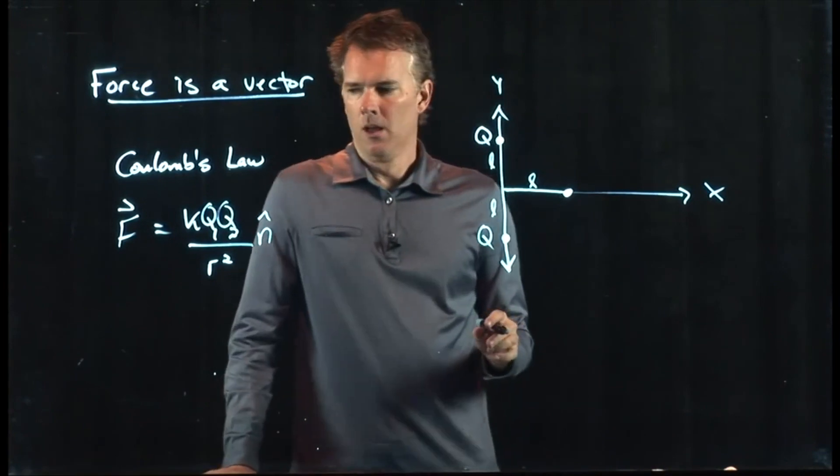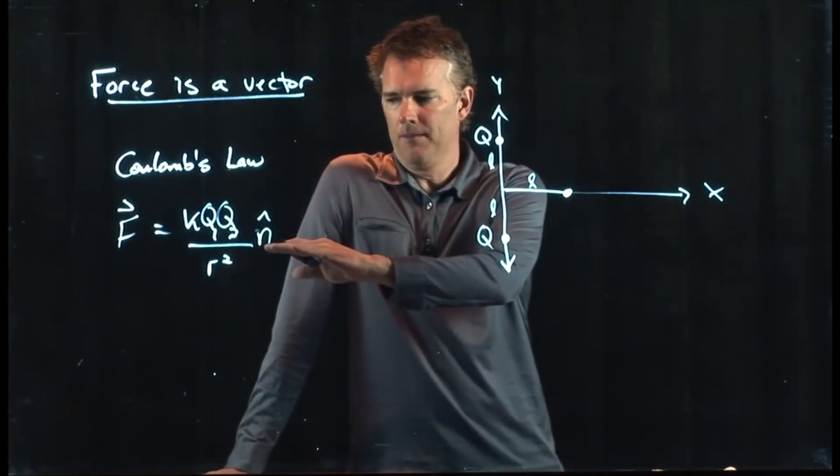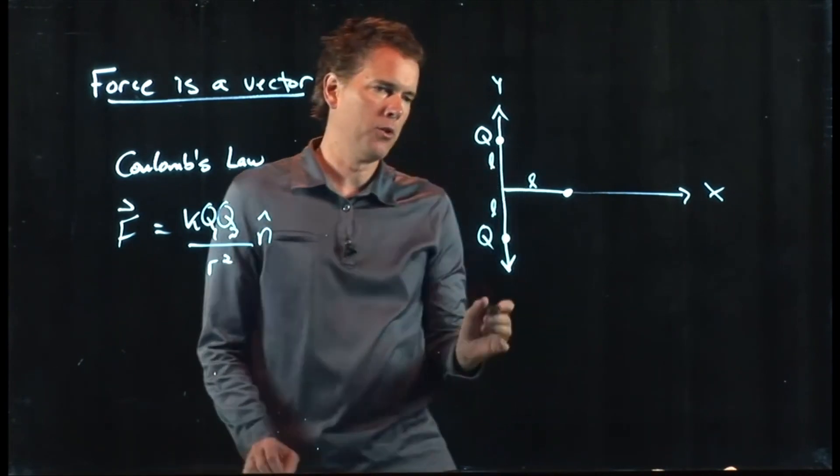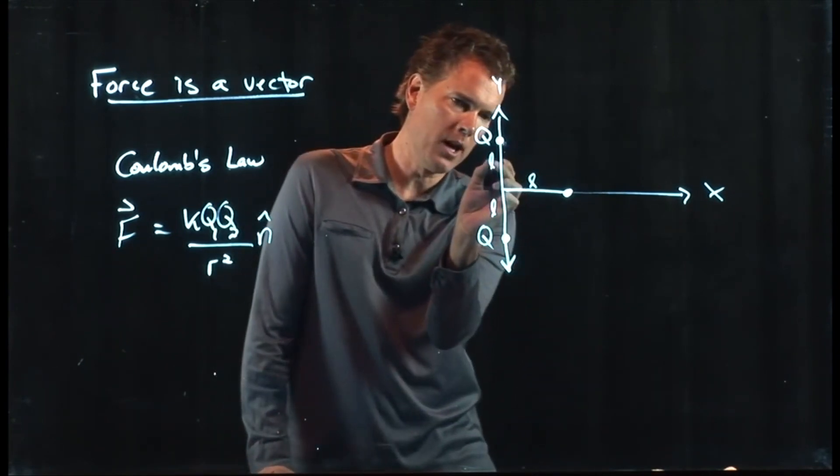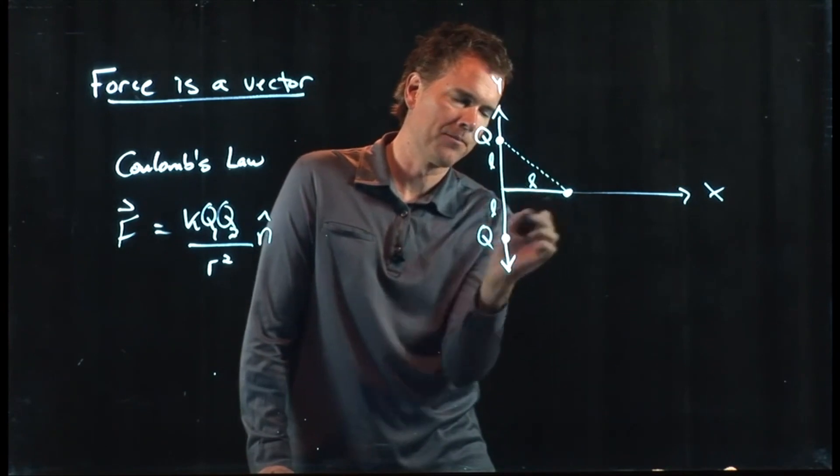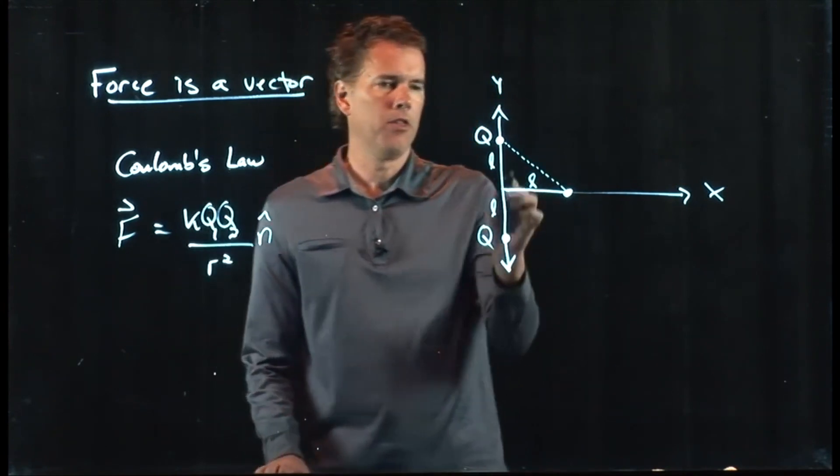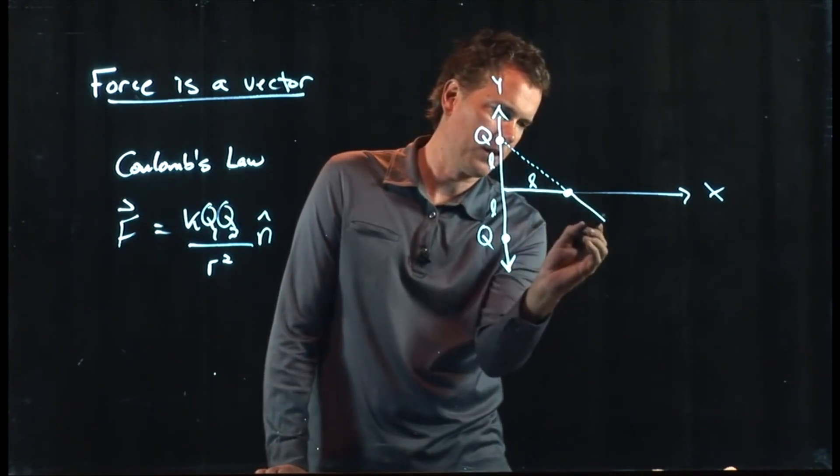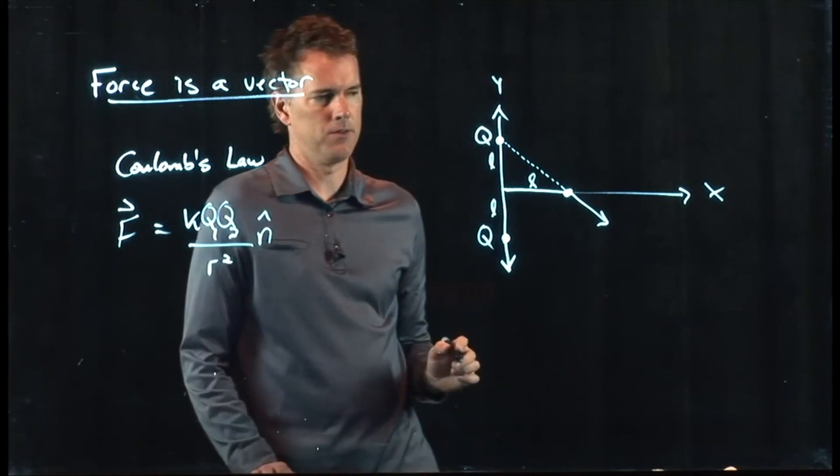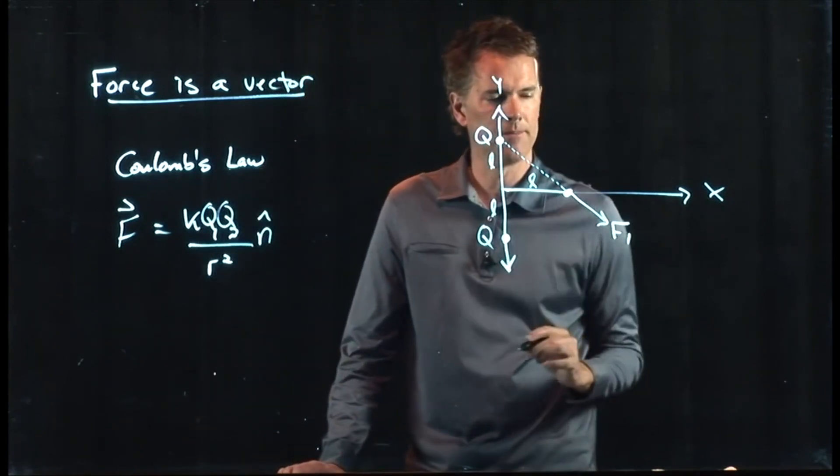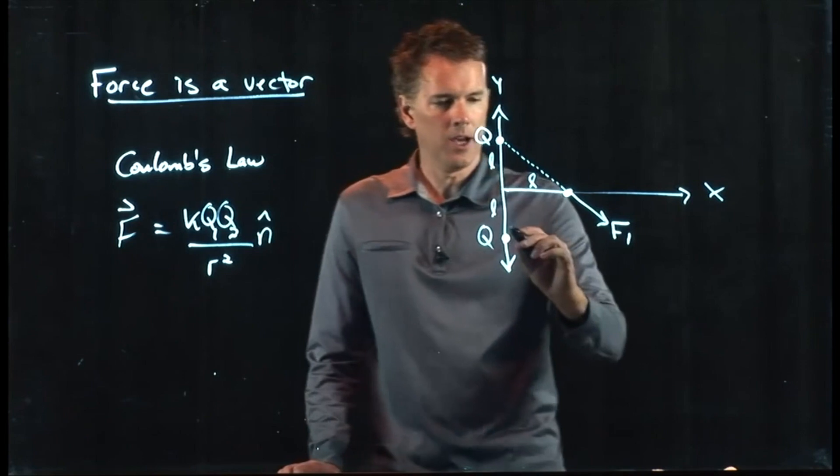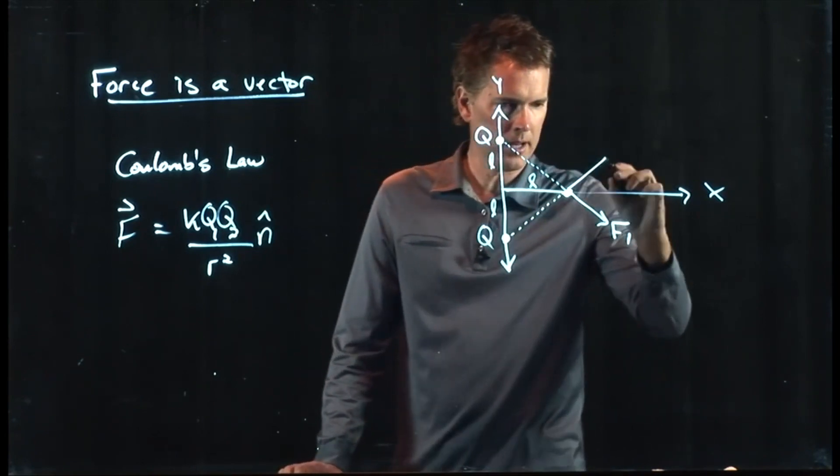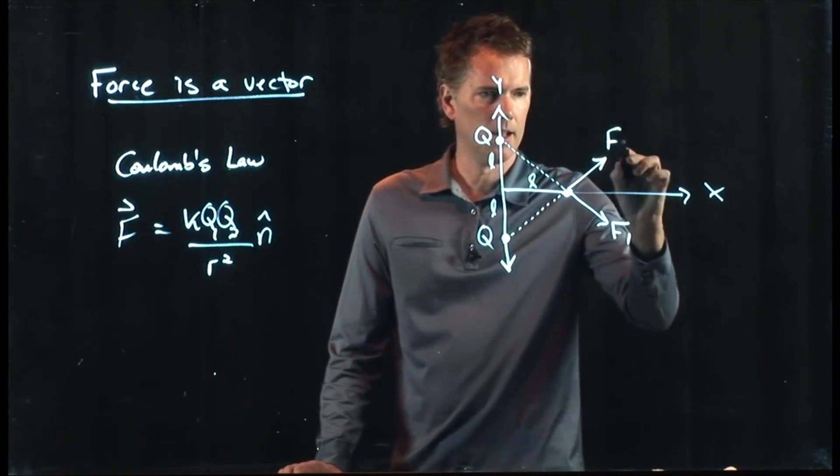And now let's figure out what the force is on this little guy out here. We wrote down the force law, but what we had in there was an N hat. And the N hat says the direction is along the line between the two charges. So if this is the line, then the force on this guy has to be in that direction. We'll call that F1. The other guy is coming up like that. And so the force from it has to be along that line, F2.